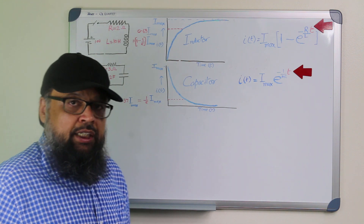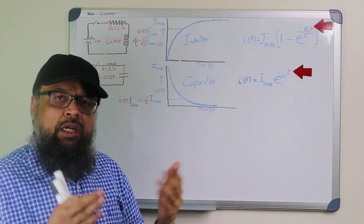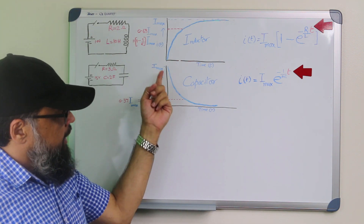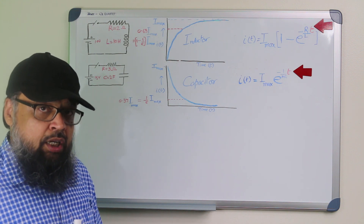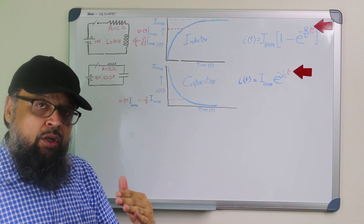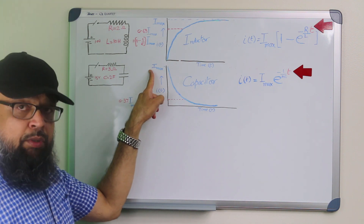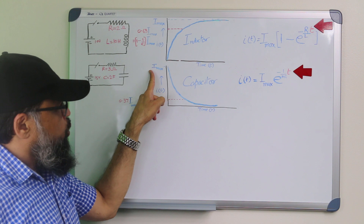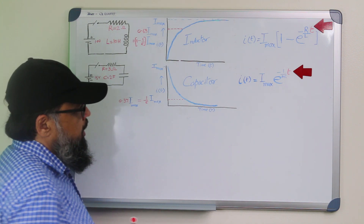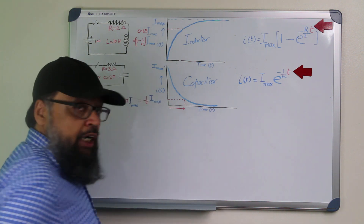Now let's talk about the time constant. The time constant of a decaying parameter — any parameter, it could be current, it could be voltage — is the time taken by the parameter to reach 37% of its maximum value. So we are looking for a 63% drop. If this is the maximum value, or 100%, this is the 63% drop of this value. The time taken for this is called the time constant.